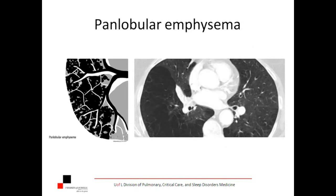Another flavor of emphysema is called panlobular. In both of these pictures you can see that the secondary lobules are becoming totally obliterated — huge areas, regions of just air with really no gas exchange surface left. This is not nearly as common as the centrilobular pattern. The centrilobular pattern is by far the most common that we will see.